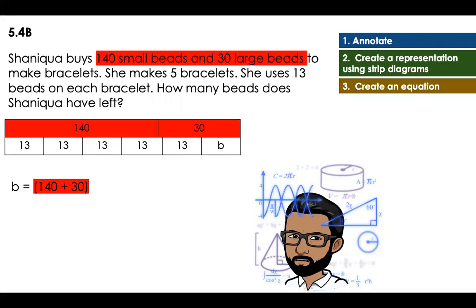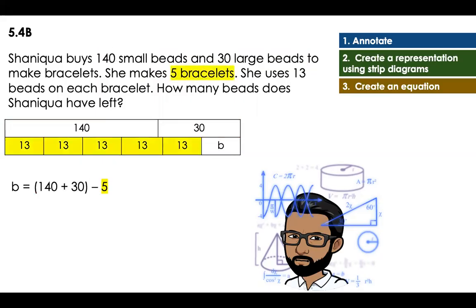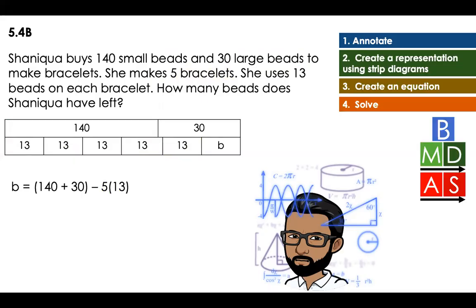B, that is what is left, is equal to 140 plus 30, that are the small beads and the large beads together, minus the five parts times 13. Because I have 13 how many times? Five. Now, I just have to start solving to find the answer for this equation.